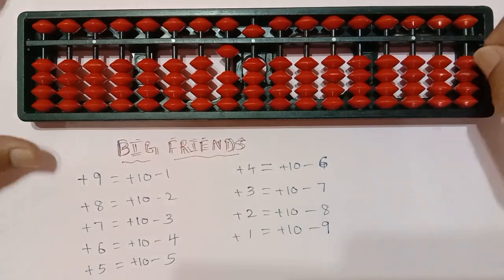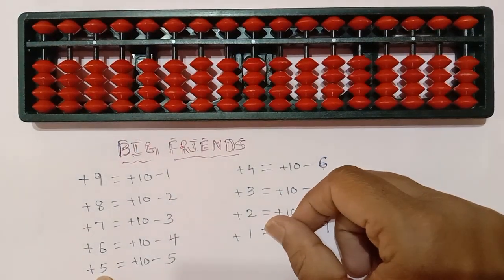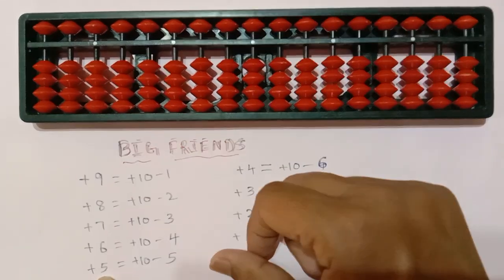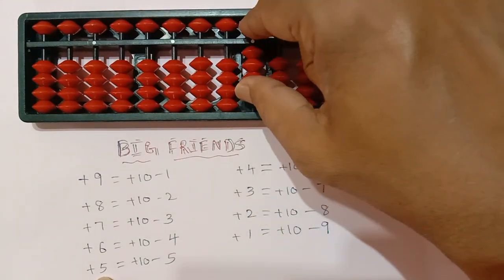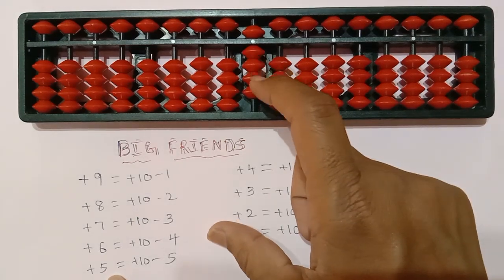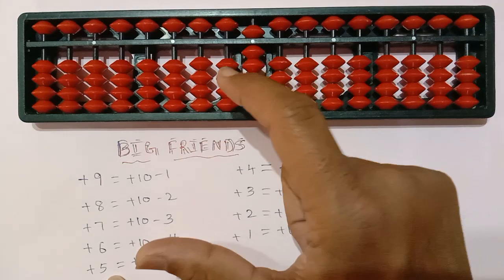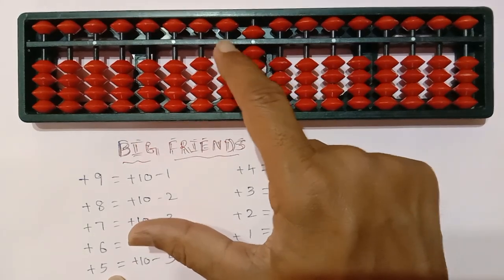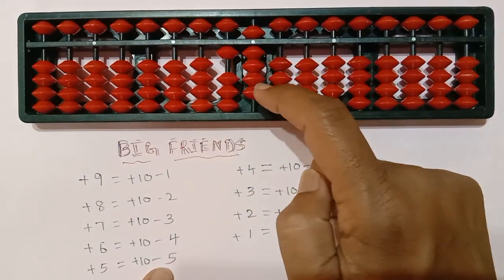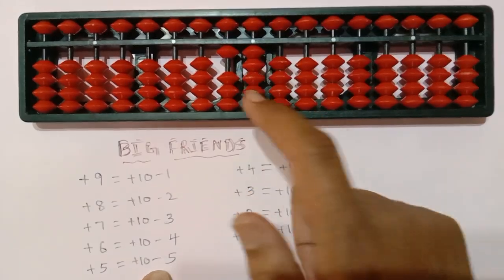Now let us see one more example. 9 plus 5 — there is no space to add here, so plus 5 means we have to add here 10. So add 10 minus 5. It becomes 14 now.